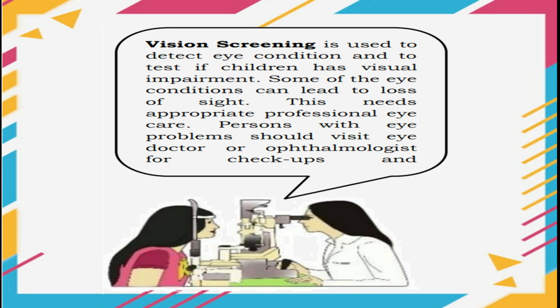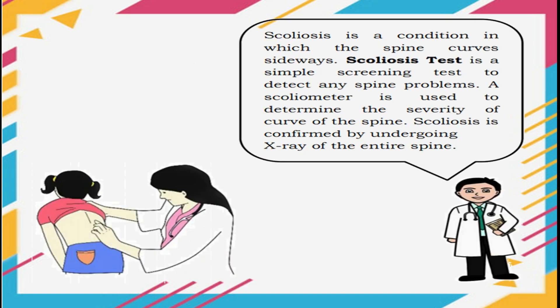Vision screening is used to detect eye conditions and to test if children have visual impairment. Some eye conditions can lead to loss of sight, and this requires appropriate professional eye care. Persons with eye problems should visit an eye doctor or ophthalmologist for check-ups. Scoliosis is a condition in which the spine curves sideways. Scoliosis test is a simple screening test to detect any spine problems. A scoliometer is used to determine the severity of the curve of the spine. Scoliosis is confirmed by undergoing an x-ray of the entire spine.